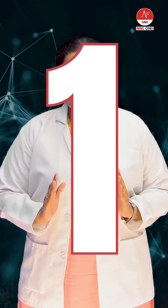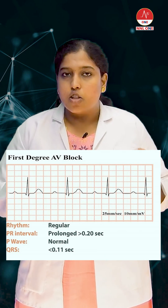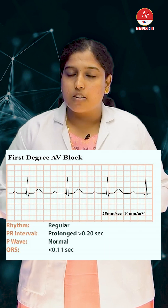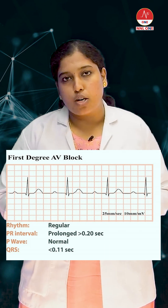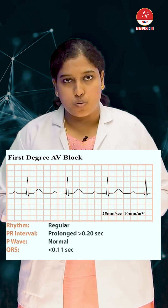We have three types of heart block. First, we are going to see about the first degree heart block, where you have the prolongation of the PR interval. The normal PR interval is 0.12 to 0.20 seconds.